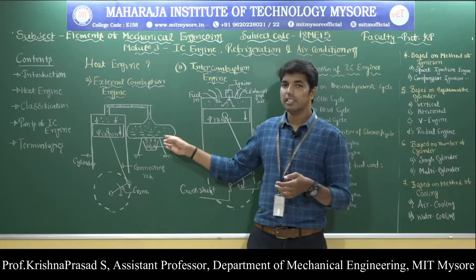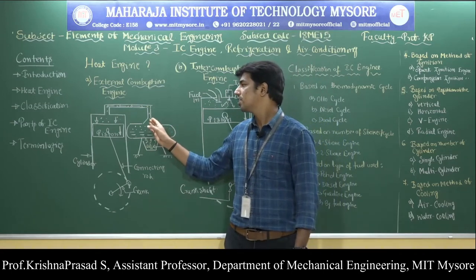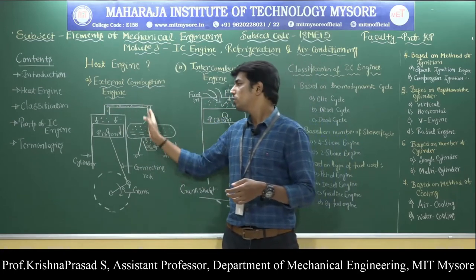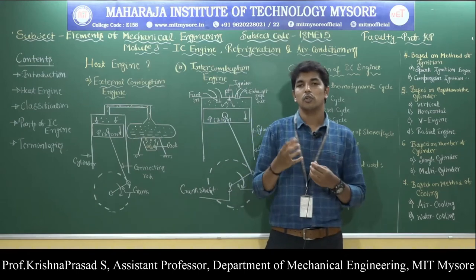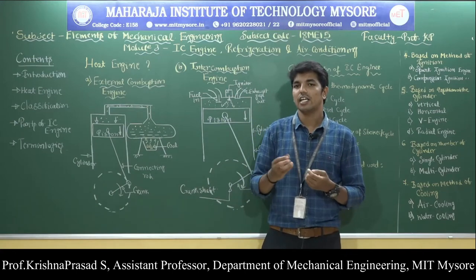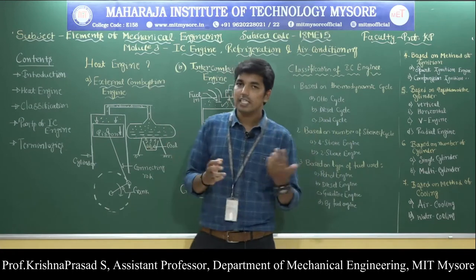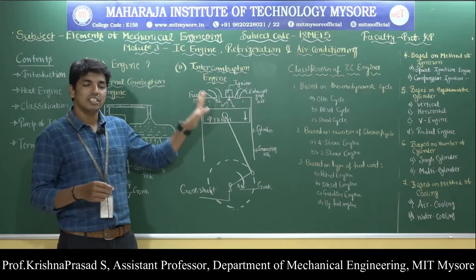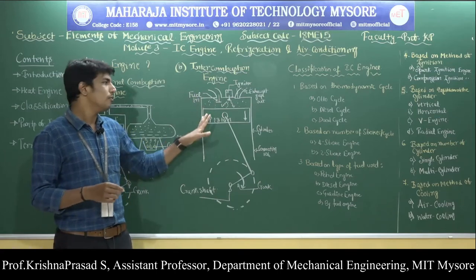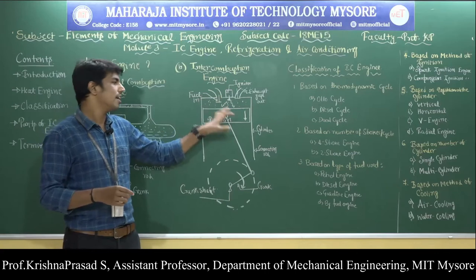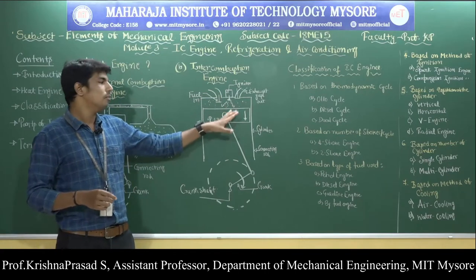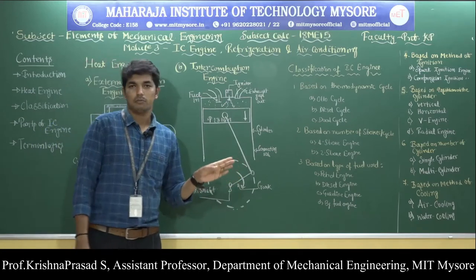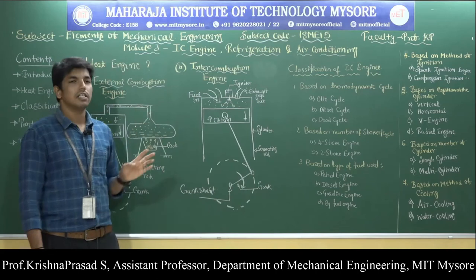In the external combustion engine, combustion takes place outside the engine cylinder and hot gases pass through a tube before entering the cylinder — causing some heat loss along the way. In the internal combustion engine, complete combustion of the fuel takes place inside the engine cylinder itself. Therefore, whatever heat energy is developed is completely exerted on the piston, and the motion of the piston is transferred to the crankshaft through the connecting rod and crank.